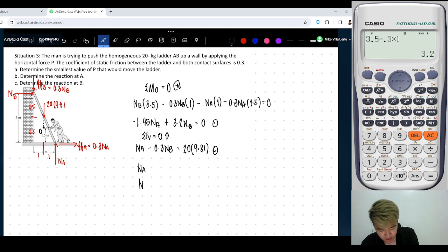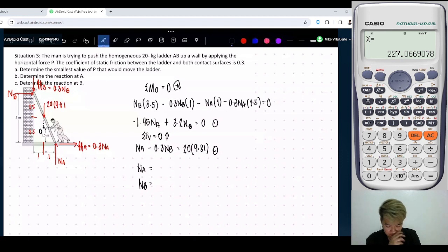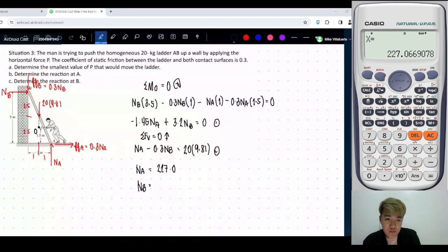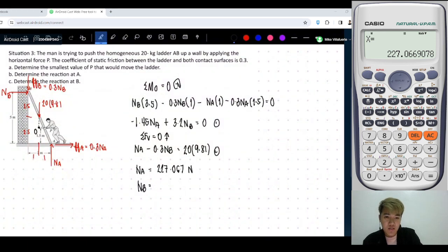So what's the value of NA, NB? So we sum. That is negative 1.45, 3.2, 0.1, negative 0.3, 20 times 9.81. So that is equal to... 227.0, 227.06967 N. And then for NB, that is equal to... 102.890 N.